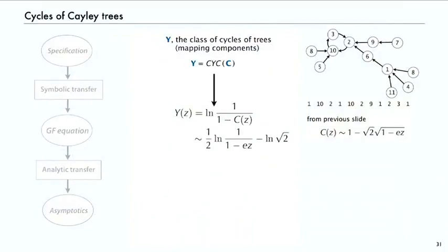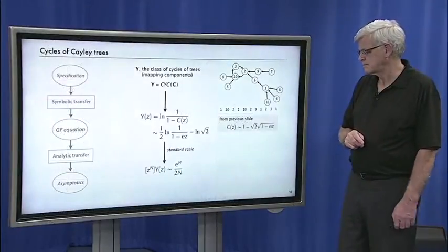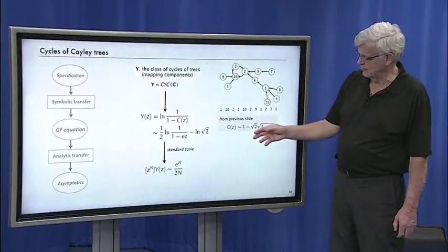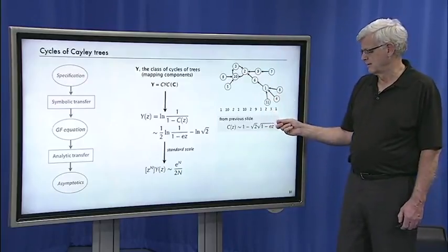So that's approximation for the generating function for the number of mapping components. But this one is just a standard scale, just as log of 1/(1-z) is [z^n]e^n/n. So that immediately gives the asymptotics of the coefficients. The number of cycles in trees is e^n/(2n).